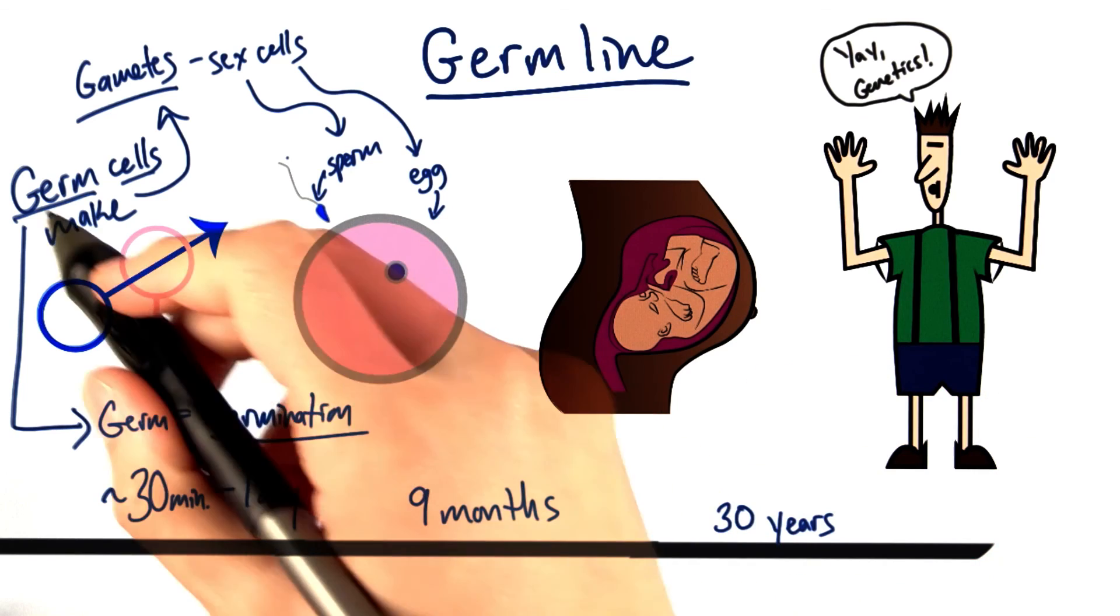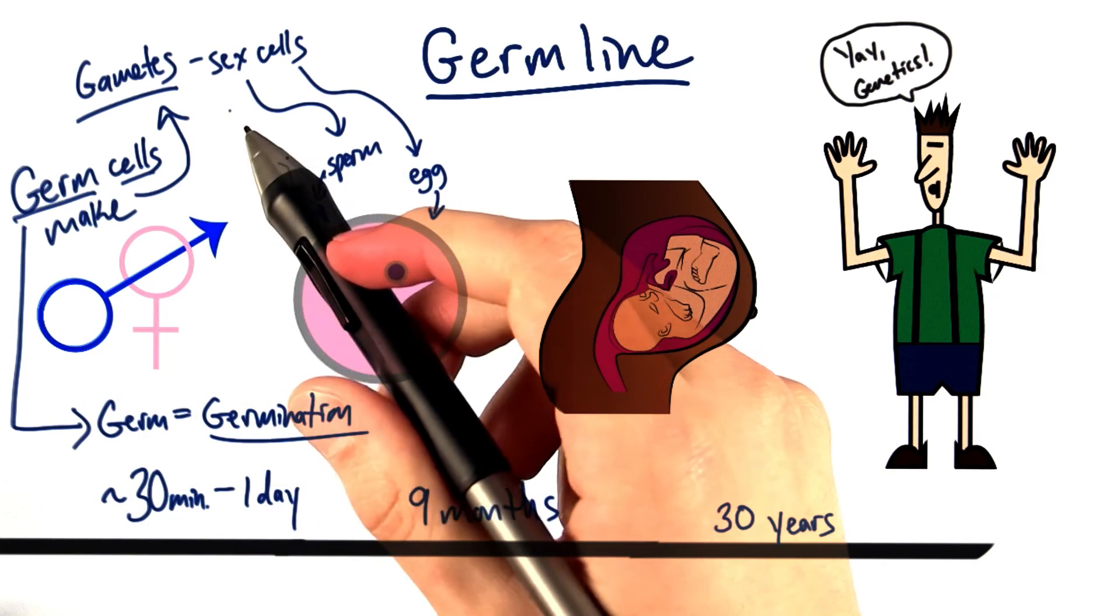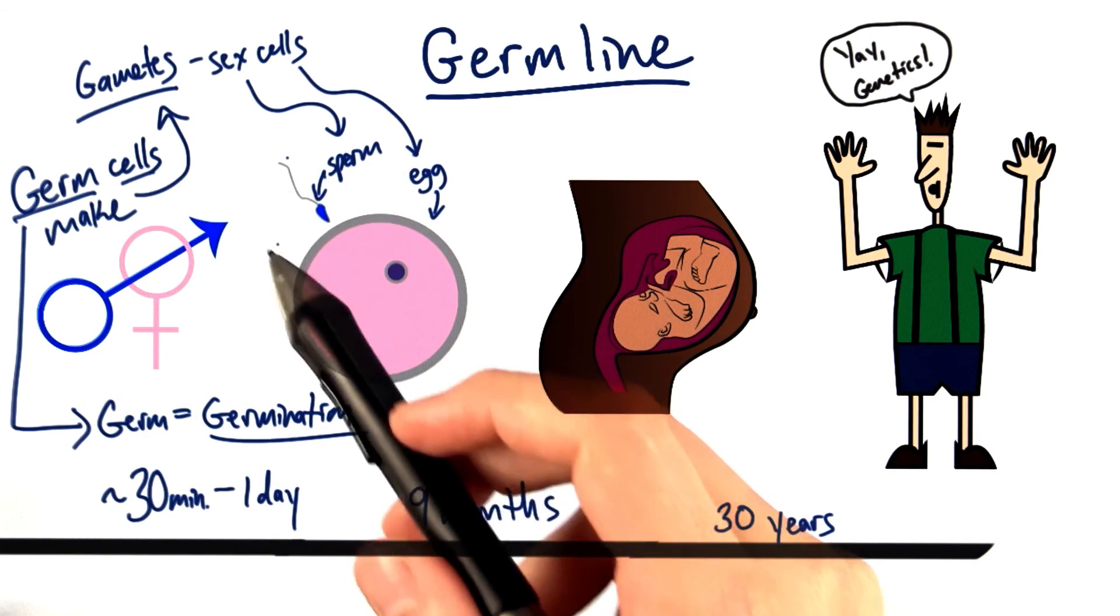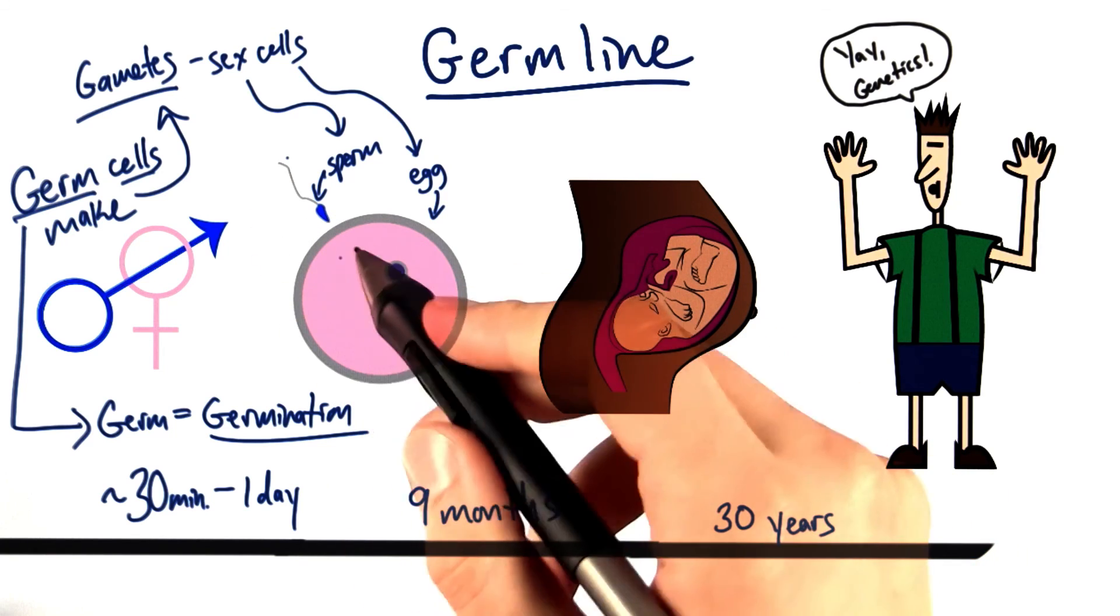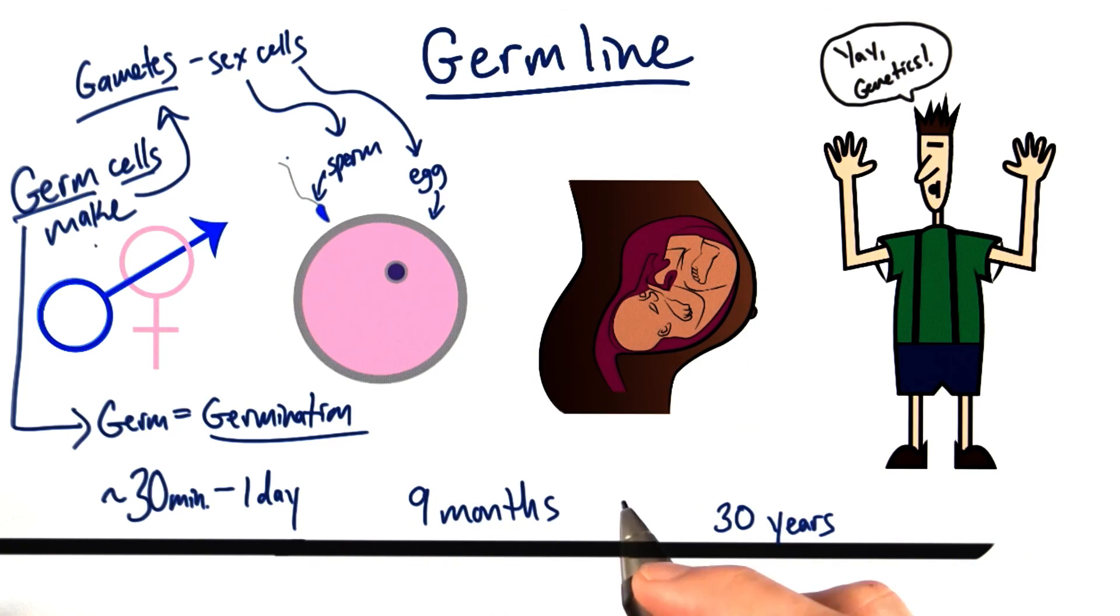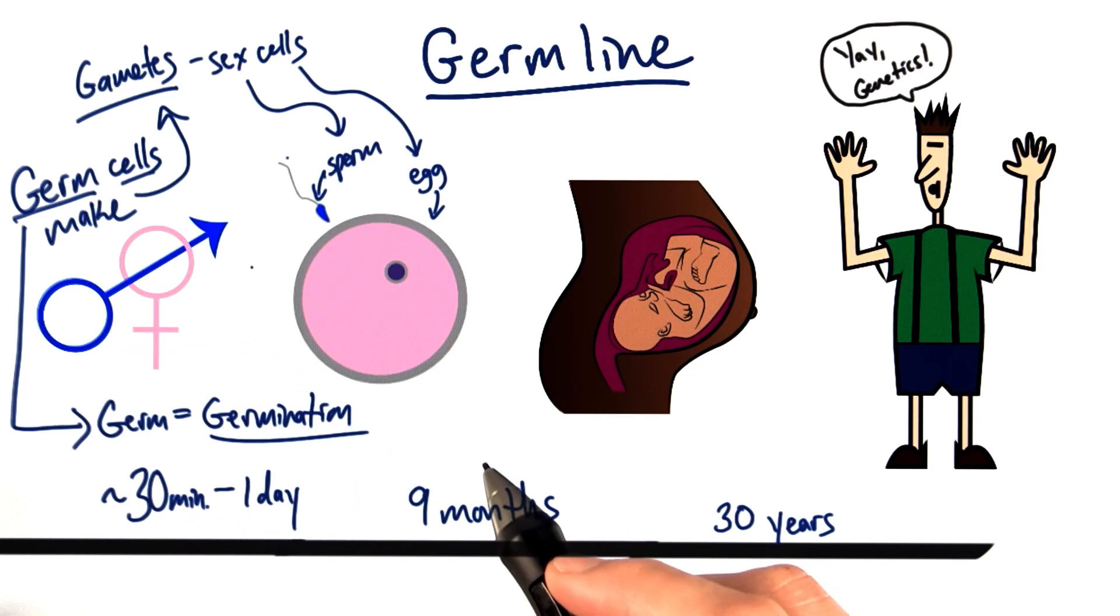So understanding how germ cells make gametes is a really critical component to understanding which alleles you're going to get from which parent. Let's talk a little bit more about how that process of cell division is going to occur.